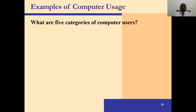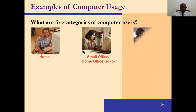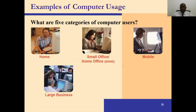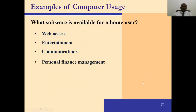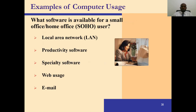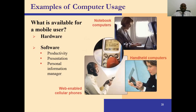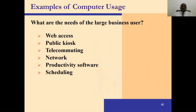There are five categories of computer users: the home user, the small office user, the mobile user (for example, someone on a train or plane), the large business user, and the power user working at a workstation. Software available for home users includes web access, entertainment, communication, and personal finance management. For small office or home users, there is also local area networking, productivity software, specialty software, web usage, and email.